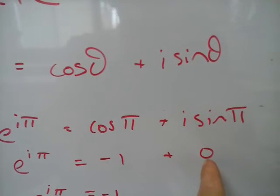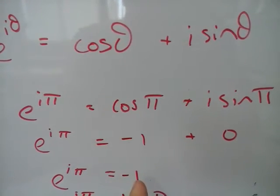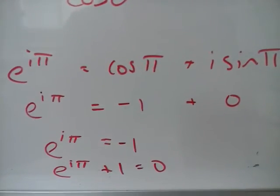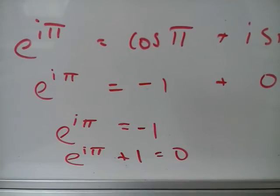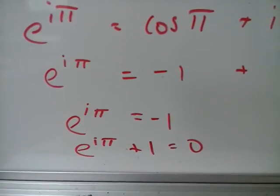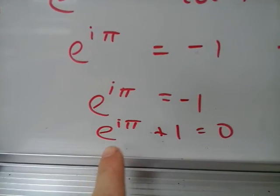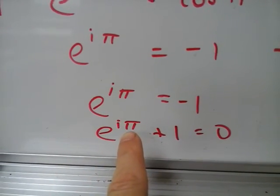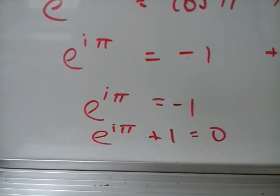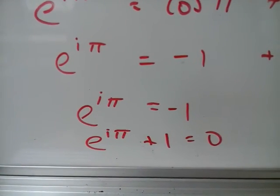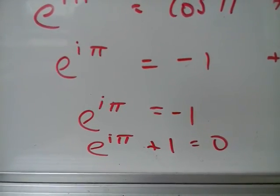So I end up with e to the pi i equals minus one. I can rearrange that equation a little bit. I get e to the pi i plus one equals zero. And this beautiful little equation has all the interesting numbers in maths. It's got e, it's got i, it's got pi, it's got one, and it's got zero, all in one eloquent, beautiful little expression.